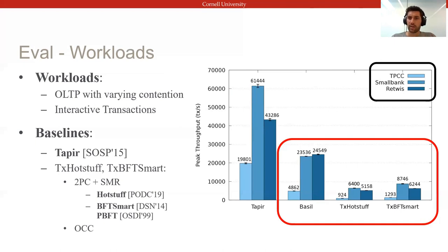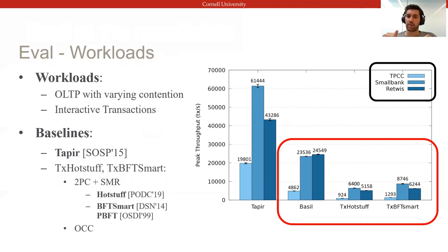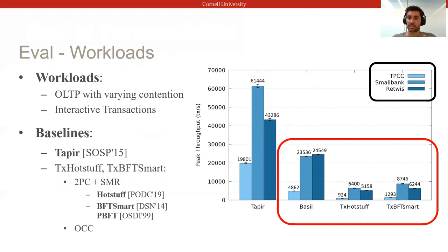On the right, we compare Basel against two BFT baselines that both offer interactive transactions and concurrent execution, but unlike Basel follow a standard modular approach that layers two-phase commit and concurrency control atop black-box consensus protocols such as HotStuff or PBFT.